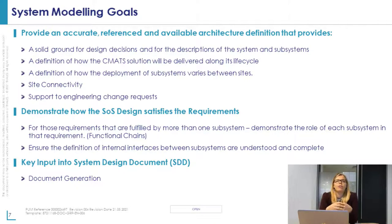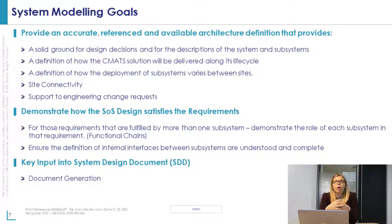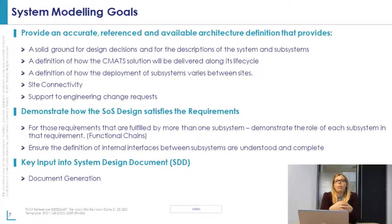The second main objective was to demonstrate how the system of systems design actually satisfies the requirements. At the SRR we had already allocated requirements to subsystems, in some cases to multiple subsystems. So we wanted to demonstrate in our model the actual role of each subsystem in satisfying those requirements, and we wanted to do that through using functional chains. We also wanted to use the model to ensure that the definition of internal interfaces between subsystems was well understood and complete. The main output was to produce a system design document, using a tool called MOSSAR, which Peter will discuss in the second half.